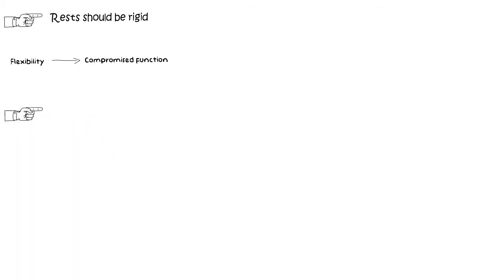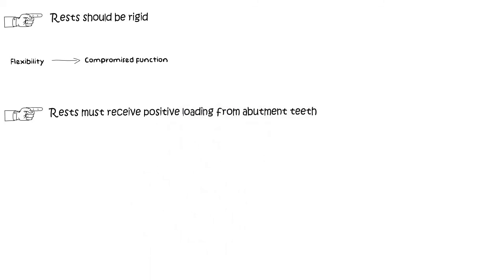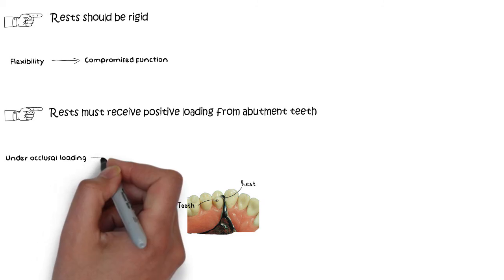Rest also must receive positive loading from the abutment teeth. Now positive loading basically means that under occlusal loading, when the denture is being subjected to functional loads, the rest and the tooth must remain in stable contact throughout.